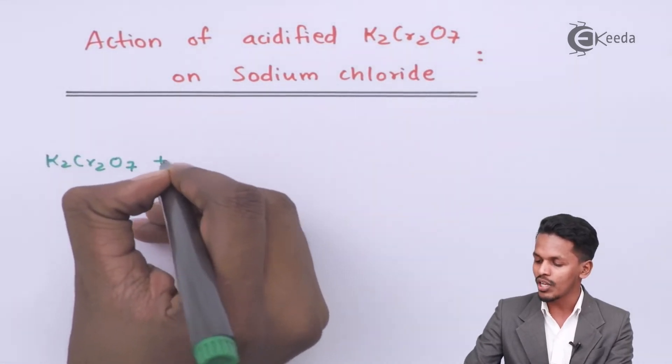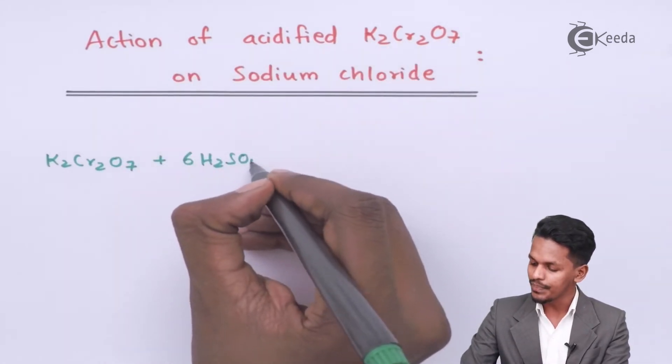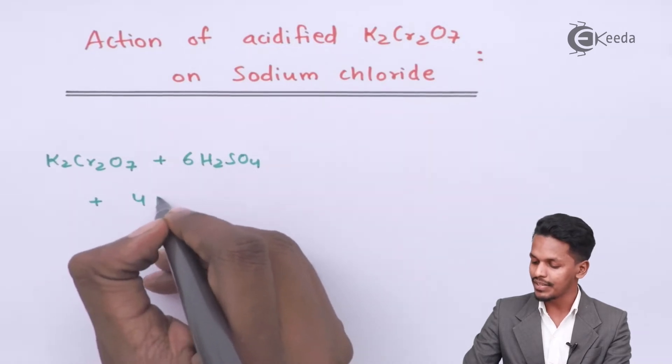K2Cr2O7, and obviously we are talking about the acid condition, that's the reason we are reacting with 6 moles of H2SO4, and we are reacting it with 4 moles of NaCl.